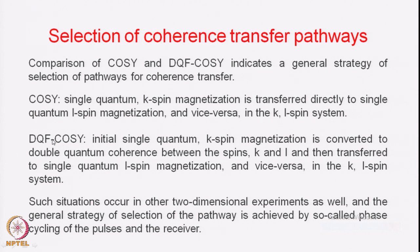To circumvent this problem, we developed the double quantum filtered COSY, where the pulse sequence is slightly modified — instead of a two-pulse experiment, this becomes a three-pulse experiment. We start with initial single quantum K spin magnetization as before, and this is now converted into double quantum coherence. We do not want to select the single quantum coherence as in COSY; here we want to select the double quantum coherence created between the source spins by the application of the first two pulses.